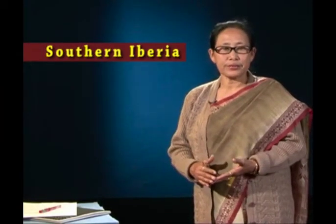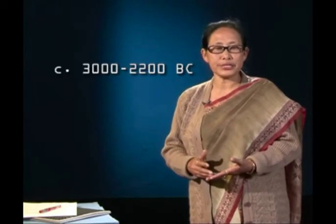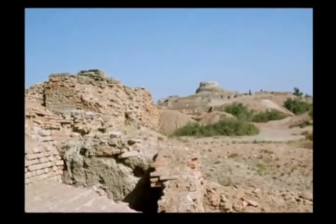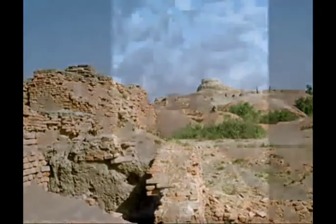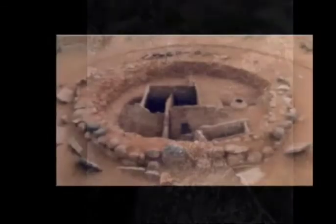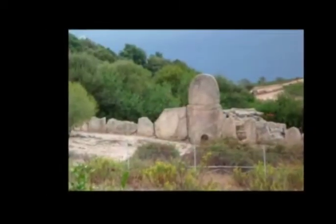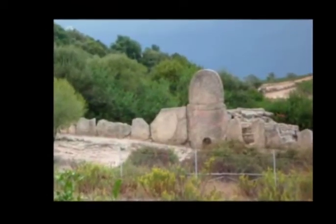In the Late Neolithic of Southern Iberia, at around 3,000 to 2,200 BC, some farming communities fortified their settlements with concentric dry stone walls and built outlying bastions, probably to protect their irrigated fields and crops. They buried their dead in megalithic communal graves with grave goods. Megalithic tombs were of several types.